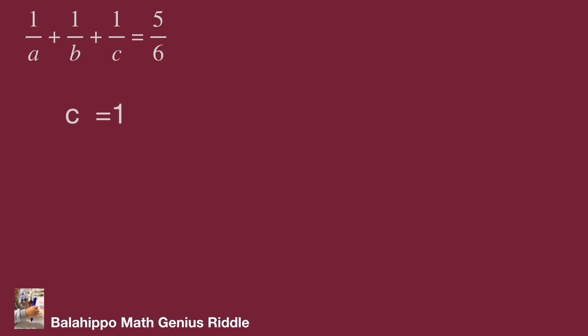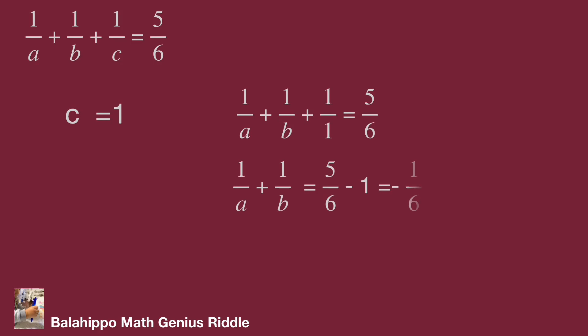When C equals 1, substitute C by 1 into the given equation. We get 1 over A plus 1 over B equal to negative 1 over 6. Since 1 over A plus 1 over B is negative, this conflicts with the requirement that A, B, C are positive integers. So C equals 1 is a false answer.